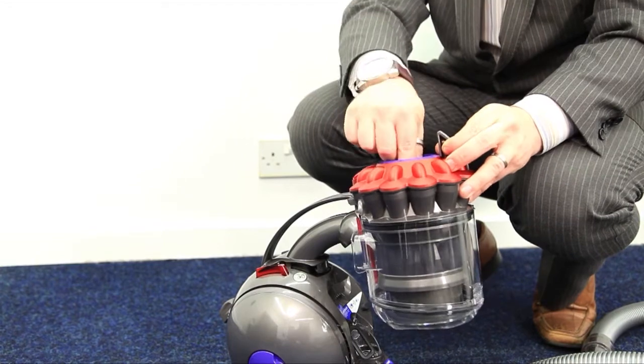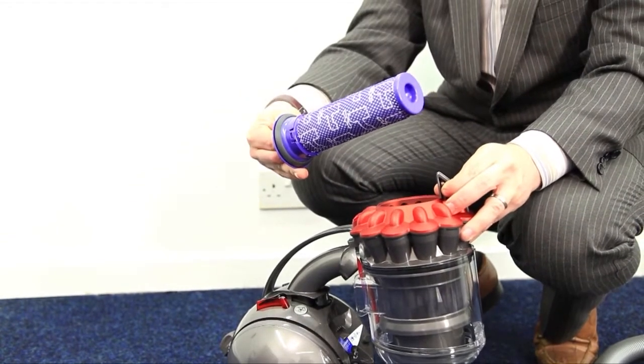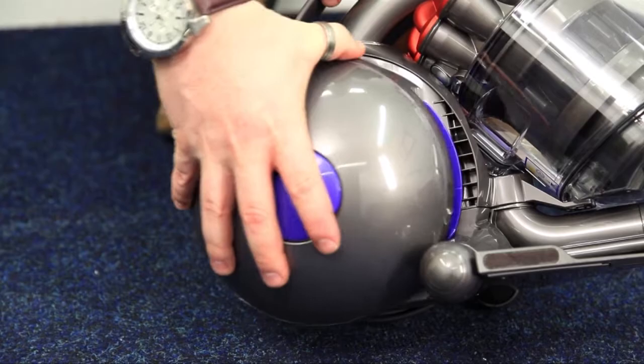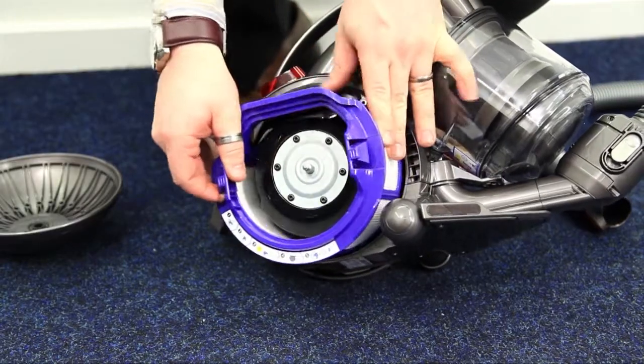The machine has two easy to clean filters, one in the cyclone pack and one in the side of the ball that needs to be washed once a month.